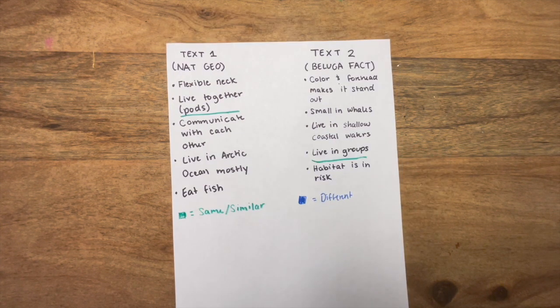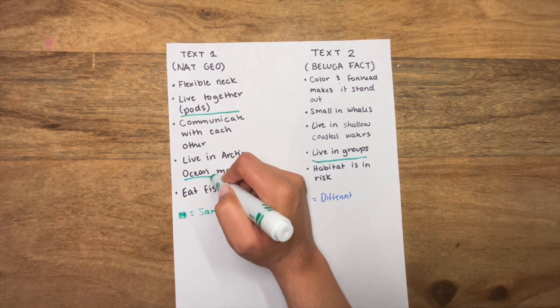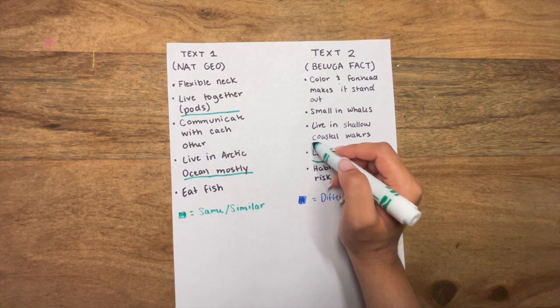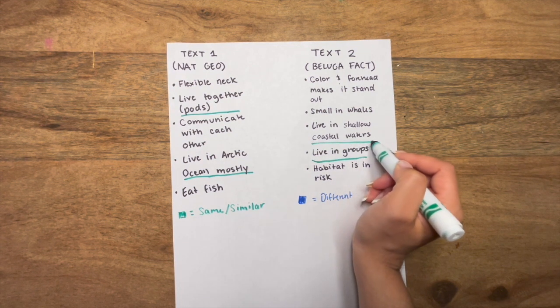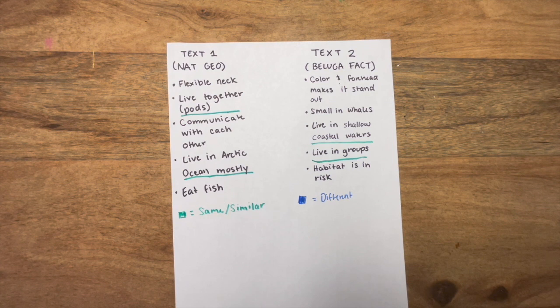The second point is that in text one, it mentions that beluga whales live in the Arctic Ocean. And text two also has a similar line where it says that beluga whales live in shallow coastal waters. The other points that are remaining seem to be different from one another.